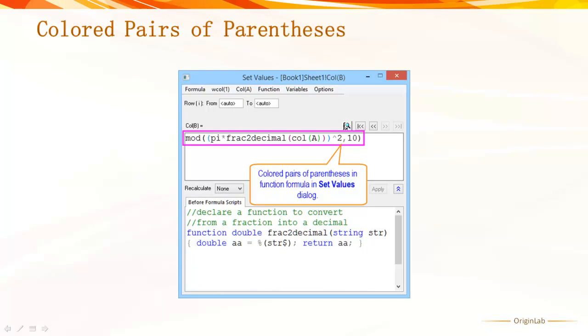In this version, we also support colored pairs of parentheses in the Set Column Values dialog, Function Builder, Function Plot, Column Filter, and Worksheet Query, anywhere where formula or function are defined. This feature will help avoid unpaired parentheses errors when writing a long formulae or script.